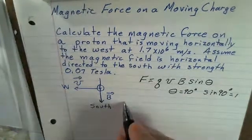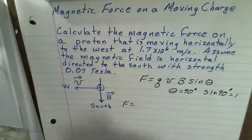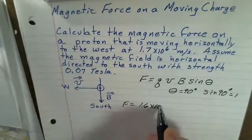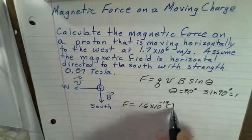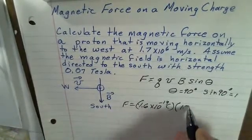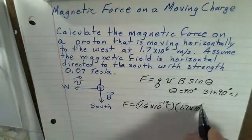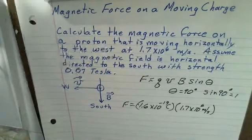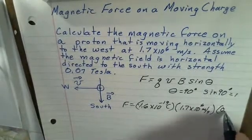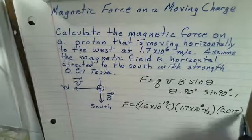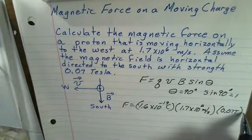Let's calculate the strength of the force. We're dealing with a proton, so we have 1.6 times 10 to the minus 19 coulombs. That's the charge on a proton. We're told the speed of this proton, 1.7 times 10 to the sixth meters per second, and we're told the strength of the magnetic field, 0.07 teslas.